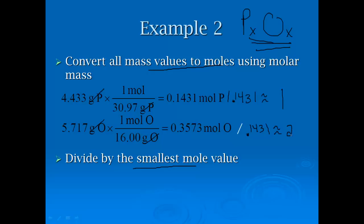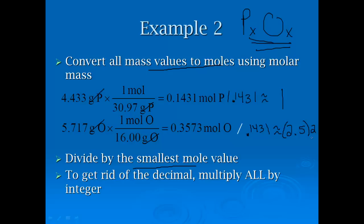Do this on your calculator. This one comes out to be 1, this one comes out to be about 2.5. If it was 2.999 I can round it up, 2.01 I can round it down, but 2.5 I can't ignore that. I have to multiply everything by an integer to get rid of it. If I take 2.5 and multiply it by 2, I'm going to get 5. It's like algebra, if I do this to one, I've got to do it to the other. My phosphorus is then going to be 2, and my oxygen is going to be 5. My final answer is P2O5 or diphosphorus pentoxide.